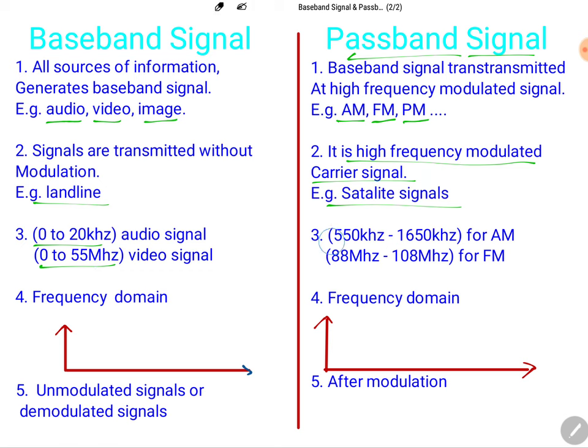For passband signals, an amplitude modulated (AM) signal has a frequency range from 550 kilohertz to 1650 kilohertz. For frequency modulation (FM) we have 88 megahertz to 108 megahertz. Other modulated signals include GSM at 900 megahertz, CDMA at 1800 megahertz, and 4G LTE at around 2 gigahertz. All of these are passband signals.